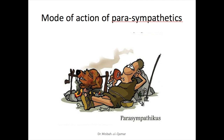Stimulation of parasympathetic nerves to the gut results in increased activity of the enteric nervous system, leading to increased motility, relaxation of sphincters, and increased secretions from glands in the GI tract. In summary, the effects of parasympathetic stimulation are increased peristalsis and tone, relaxation of sphincters, and increased digestive secretions.